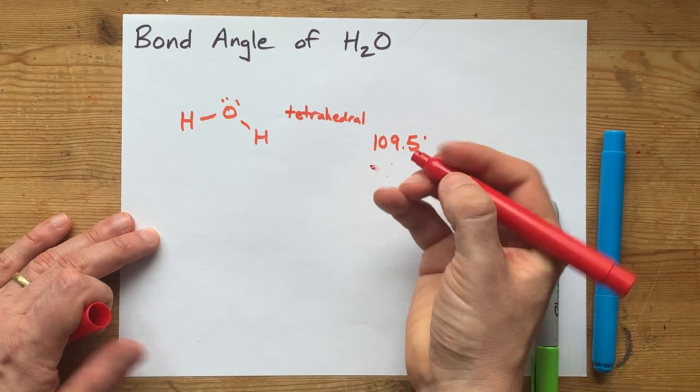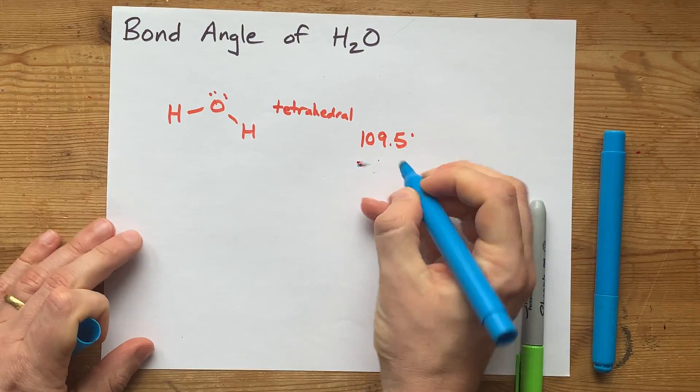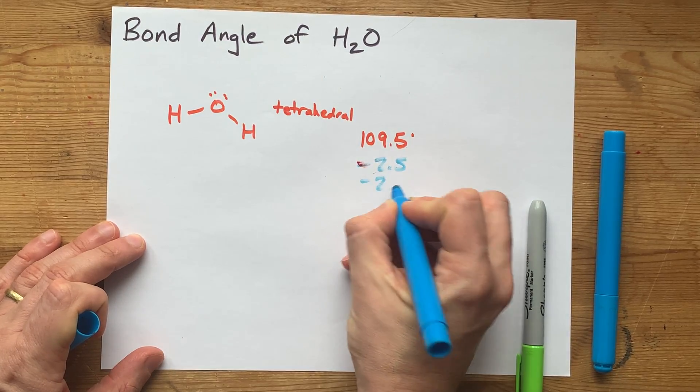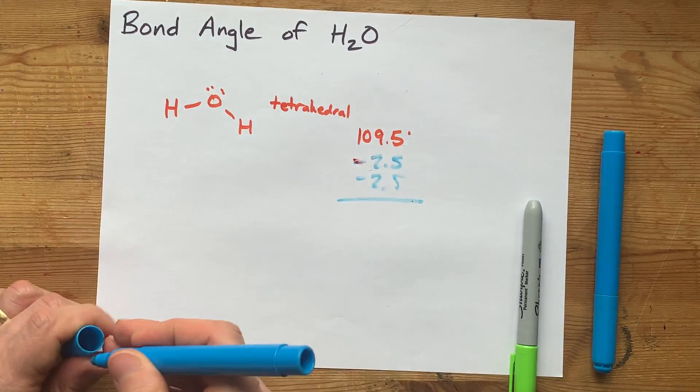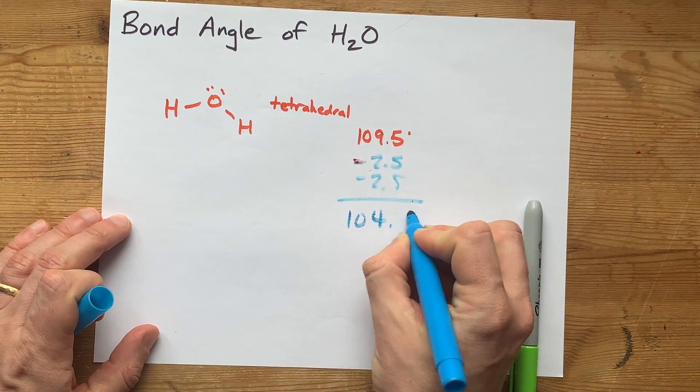So I'm going to take, okay, that marker has died in front of us. I'm going to take away about two and a half for that first lone pair, and then another two and a half for the second lone pair, which leads me to 104.5 degrees.